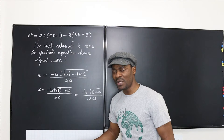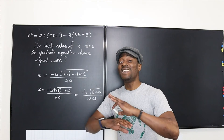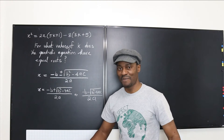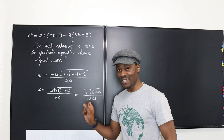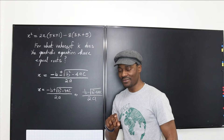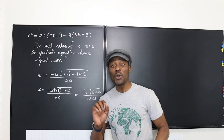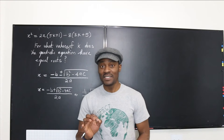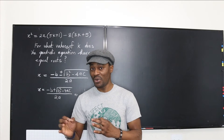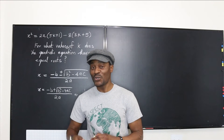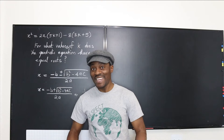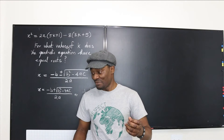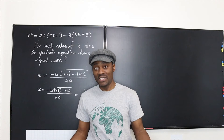That will only happen if what you add to negative b gives the same answer as when you subtract something from negative b — and that never happens unless that something is zero. Zero is the identity element for the operation of addition, so when you add or subtract zero, it doesn't change the value.